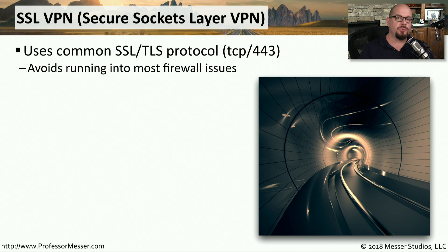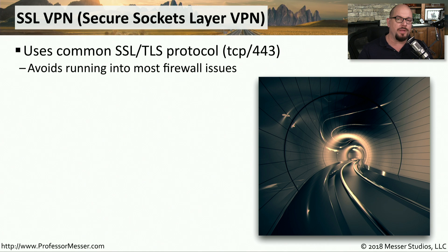One common type of virtual private network, or VPN, is one that uses SSL, or Secure Sockets Layer. These SSL VPNs use a very common protocol, which is TCP 443. This is the same protocol that we use to communicate securely to web servers inside of our browser, which means we can avoid a lot of problems with firewalls by using this very common and well-used protocol.